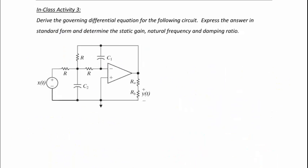Now let's do the final example of lecture 2-1. We'll derive the governing differential equation for an ideal operational amplifier circuit, expressing the answer in standard form and determining the static gain, natural frequency, and damping ratio. We define the meeting point of the three resistors as VA and the output of the op-amp as VO. The input is x of t and the output is y of t. We'll first derive the equation in terms of x of t and VO, then find it for y of t.